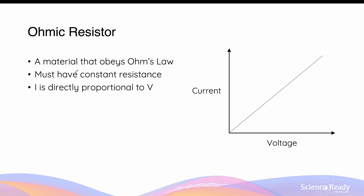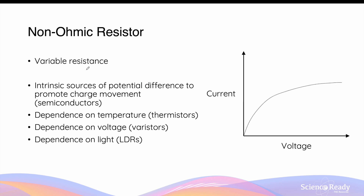Any material that obeys Ohm's law is called an ohmic resistor, and it must also have a constant resistance. Non-ohmic resistors, by contrast, have a variable resistance, and as a result the relationship between current and voltage is not linear — on a graph, the current may increase with voltage but at a decreasing rate, not at a constant rate.